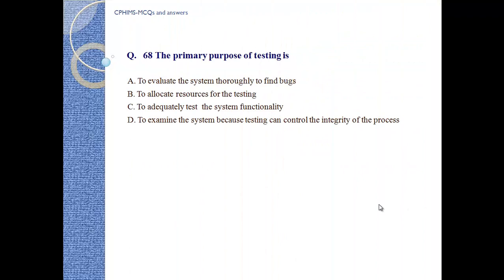Question number 68. The primary purpose of testing is: A. To evaluate the system thoroughly to find bugs. B. To allocate resources for testing. C. To adequately test the system functionality. D. To examine the system because testing can control the integrity of the process. Answer A. To evaluate the system thoroughly to find bugs.